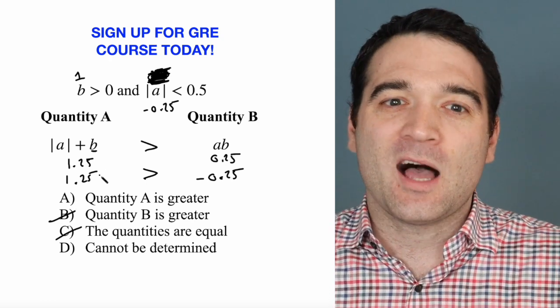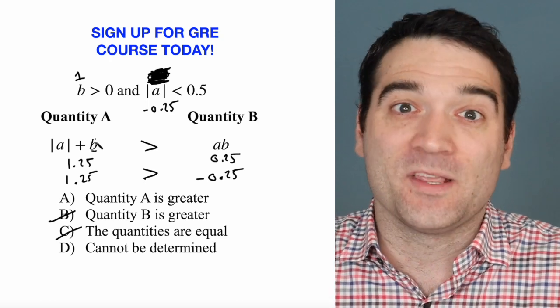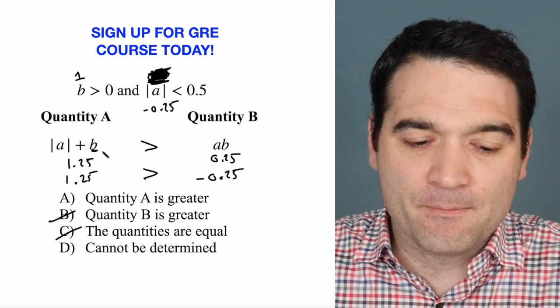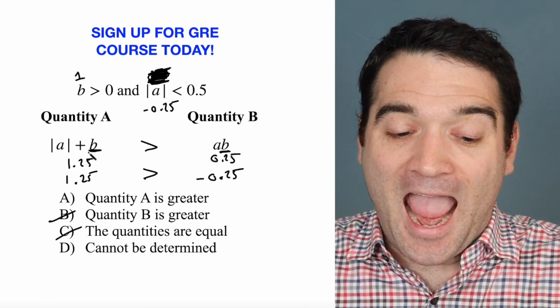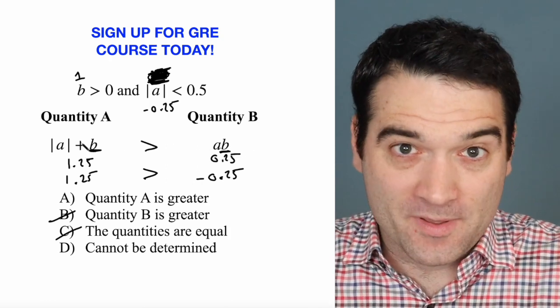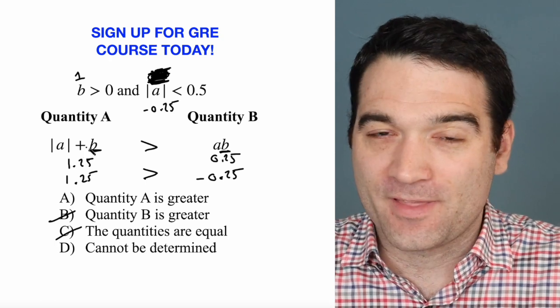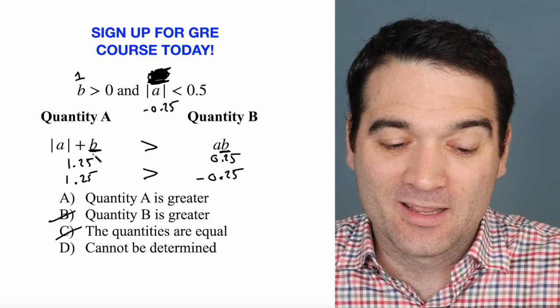Well, here's the logical reason why quantity A always has to be greater than quantity B. Let's take B. B is some number. If I add a positive number to B, it doesn't matter if that number is a fraction, decimal, whatever. It's going to get bigger.